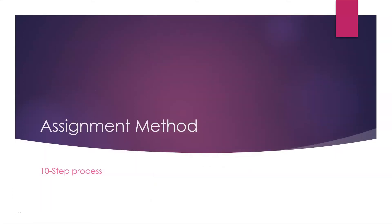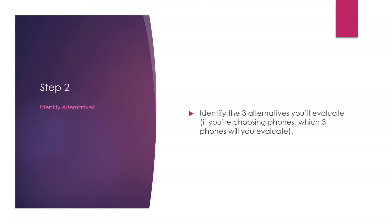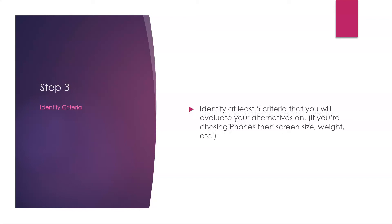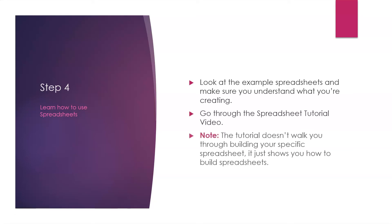The assignment follows a 12-step process. Step one: choose your decision — whether it's phone selection, car selection, school program, etc. Step two: identify three alternatives you'll evaluate. Step three: identify at least five criteria you'll evaluate your alternatives on — for phones, that could be screen size, weight, etc. Step four: learn how to use spreadsheets by looking at the example spreadsheets and going through the tutorial video. Note the tutorial doesn't walk you through building your specific spreadsheet — it just shows you how to build spreadsheets and enter formulas. You still need to apply your own knowledge to create the spreadsheet.